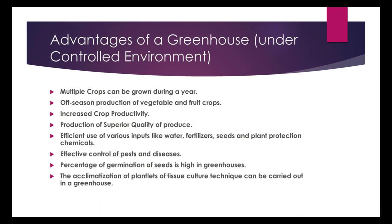The various advantages of a greenhouse under controlled environment are: multiple crops can be grown during a year; off-season production of vegetable and fruit crops; increased crop productivity; production of superior quality of produce; and efficient use of various inputs like water, fertilizers, seeds, and plant protection chemicals.